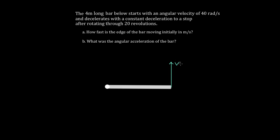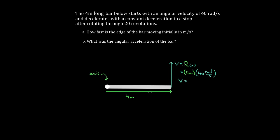We have a formula that relates linear speed to angular speed: v equals r times omega, where r is the distance from the axis to the point. The axis is at one end, so the distance from the axis to the tip is the full length of the bar — four meters. So the speed equals four meters times 40 radians per second, giving 160 meters per second. That's the fastest point on the rod.